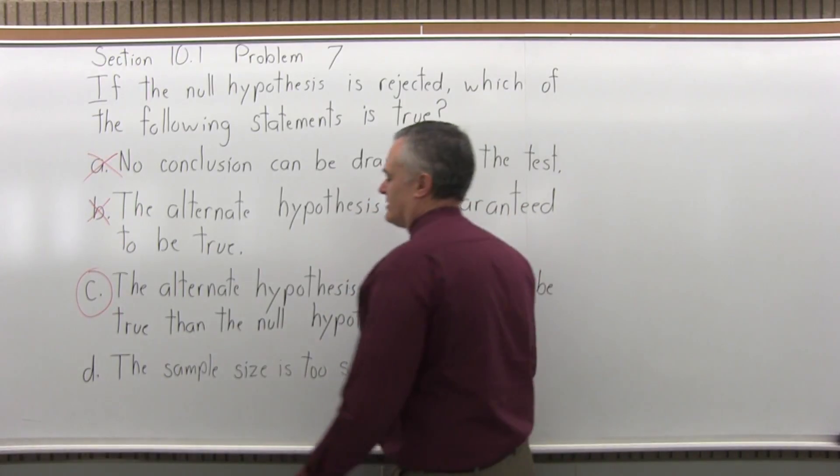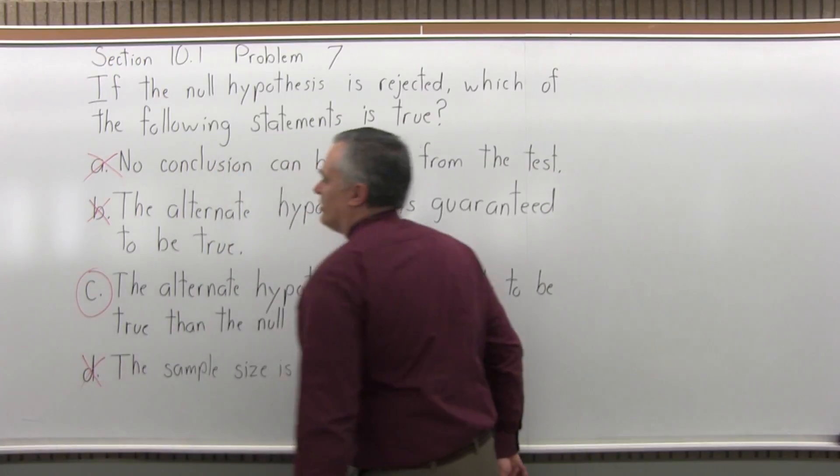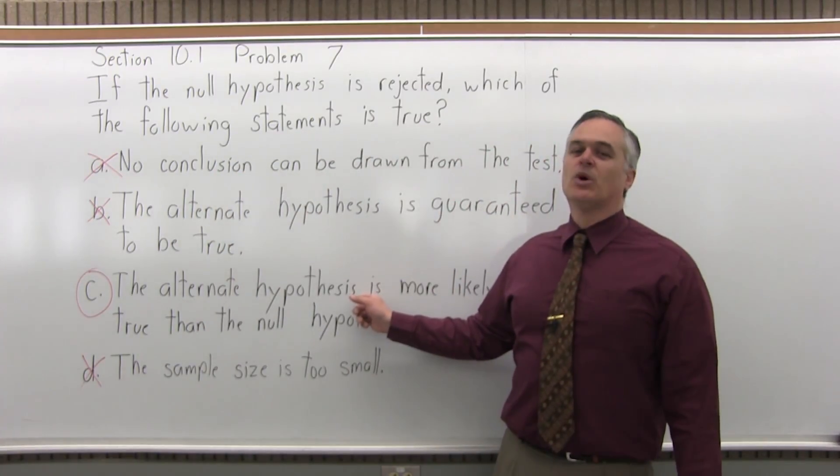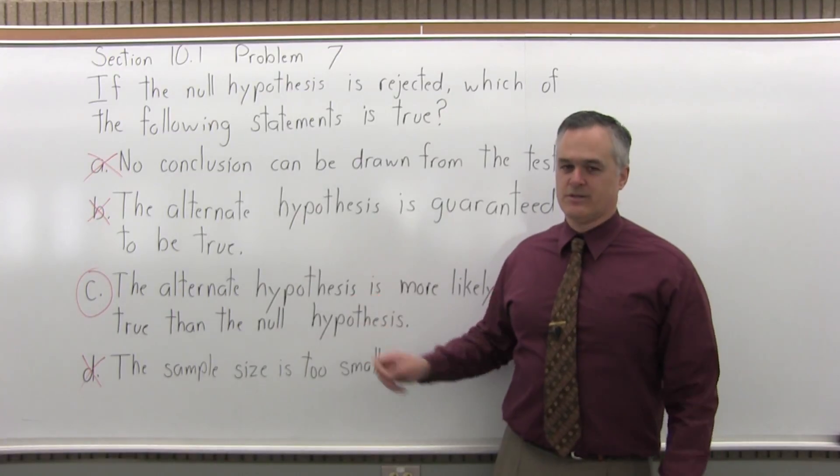And D, the sample size is too small, that's also not the case at all. So the only one that's true of your four options is C, that the alternate hypothesis is more likely to be true than the null hypothesis.